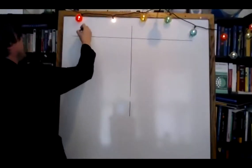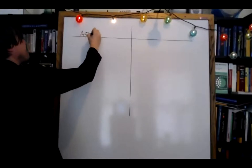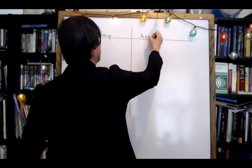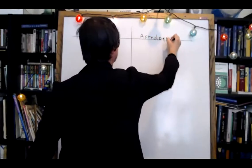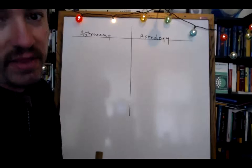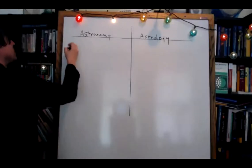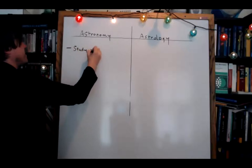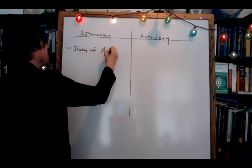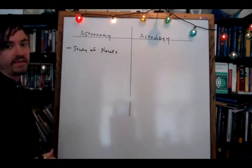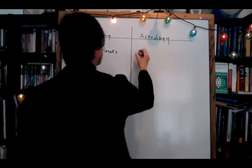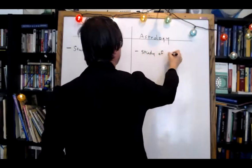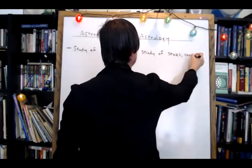So we have astronomy on one side and astrology on the other side. They're not the same thing and we have to talk about it before we talk about anything else. Adrian says astronomy is the study of planets — fine, I can get behind that. And for astrology she said study of stars and constellations.